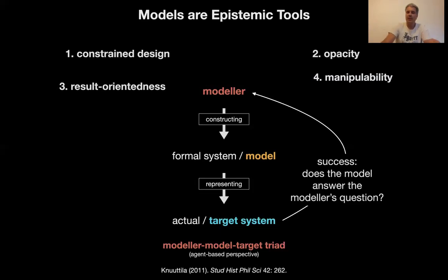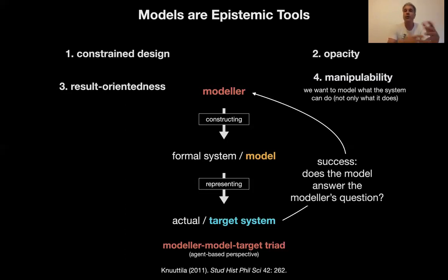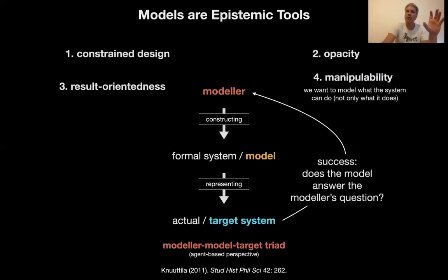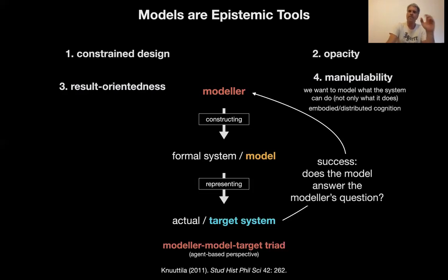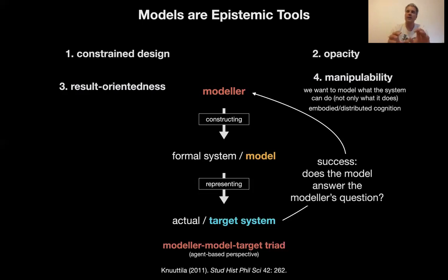The fourth characteristic is manipulability. We want to model what the system can do — not only what it does, but play around with it and predict what it could do, what it maybe testably does in other circumstances. You need that to verify a model. So a model can be used as a tool to explore possible worlds instead of the actual world. If used in this sense, the model can be handed around; it becomes embodied in an abstract way — it's still an abstract object, but one that we can manipulate and use to think about possible worlds.